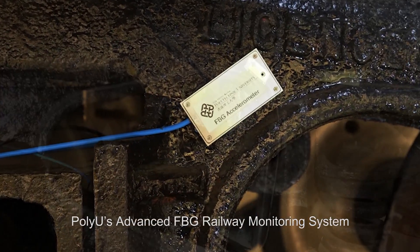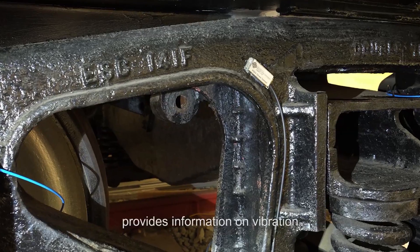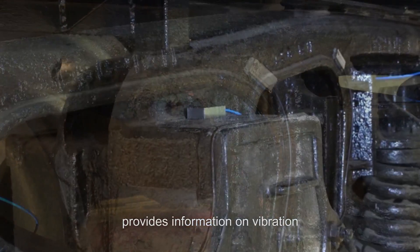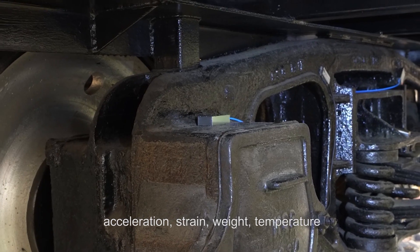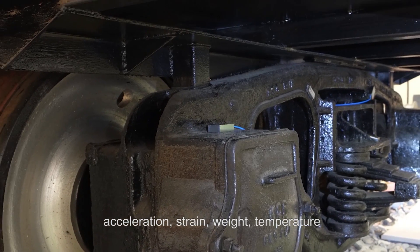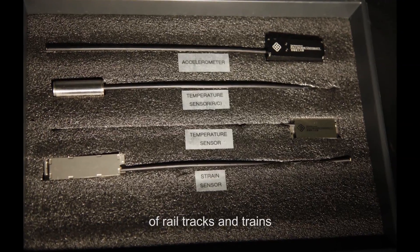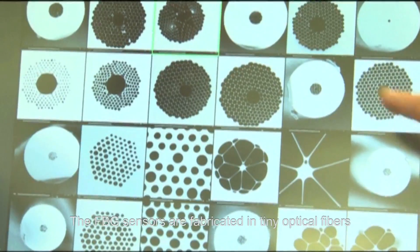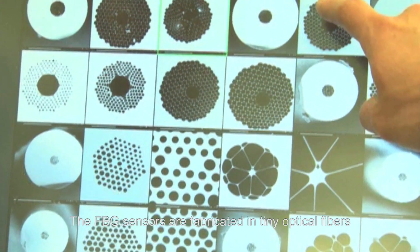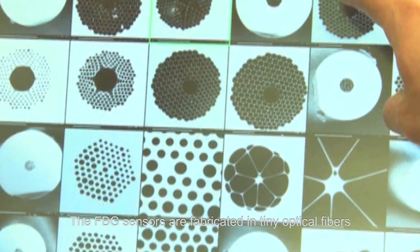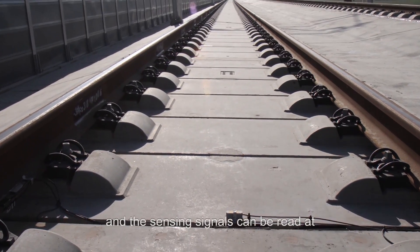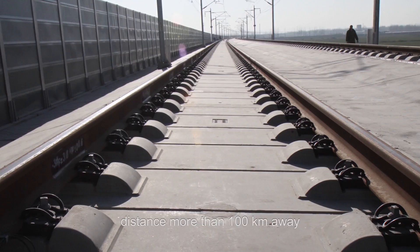PolyU's advanced FBG railway monitoring system provides information on vibration, acceleration, strain, weight, temperature and so on, for real-time condition monitoring of rail tracks and trains. The FBG sensors are fabricated in tiny optical fibers, and the sensing signals can be read at distances more than 100 km away.